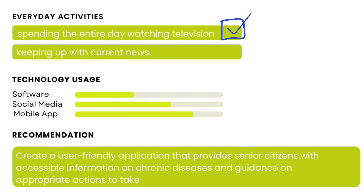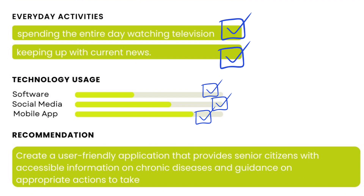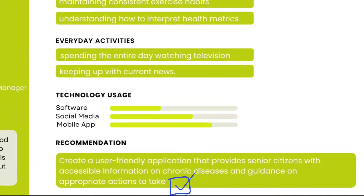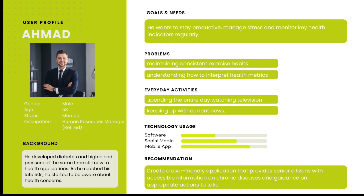Mr. Ahmad's technology usage is: software 40% of the time, social media 65% of the time, and mobile apps 80%. It is suggested that a user-friendly application be developed that offers accessible information for persons with chronic conditions, as well as suggestions on relevant activities to take. That is his recommendation.